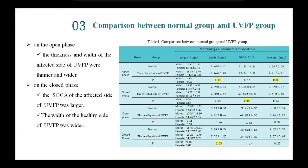Regarding the control group compared with the unilateral vocal fold paralysis group: in the open phase, the thickness and width of the affected side were thinner and wider than those in the normal group, with p-values less than 0.01. In the closed phase, the subglottal convergence angle of the affected side of the unilateral vocal cord paralysis was larger than those in the normal group. The width of the healthy side of the unilateral vocal cord paralysis was also larger than those in the normal group. There was no significant difference in other parameters.